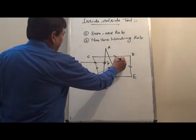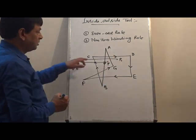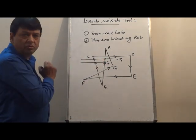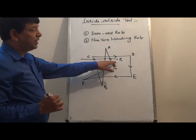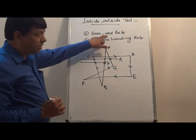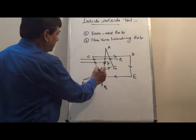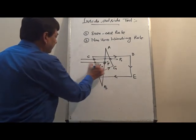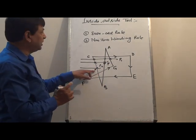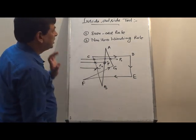Again I take a point. Draw the scan line — the number of crossings is 1, 2, 3. The count of crossings is 3, which is odd, so the point is inside the polygon. You can check anywhere in the polygon. Again I take point P2 — the crossing count is 1, which is an odd number, so this point is inside the polygon. This is the Even-Odd Rule.